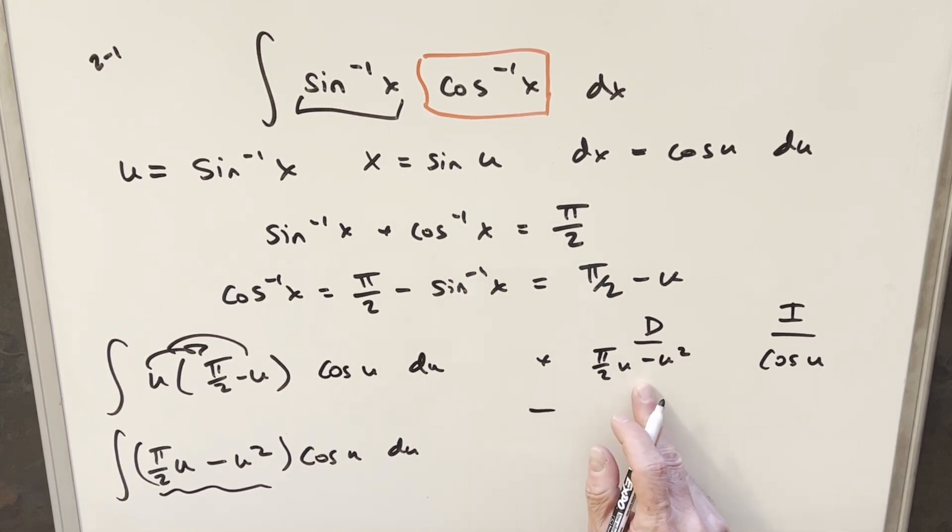So we'll differentiate π over 2 times u minus u squared. First we'll take this derivative. Derivative of the first term is going to be just π over 2. And derivative of this is going to be minus 2u.